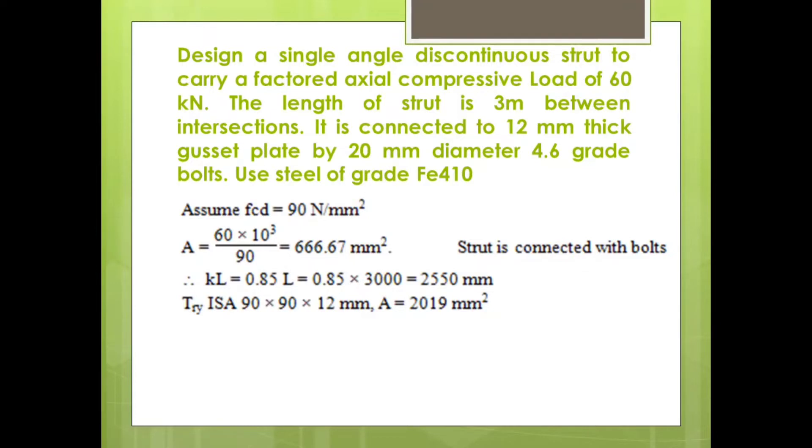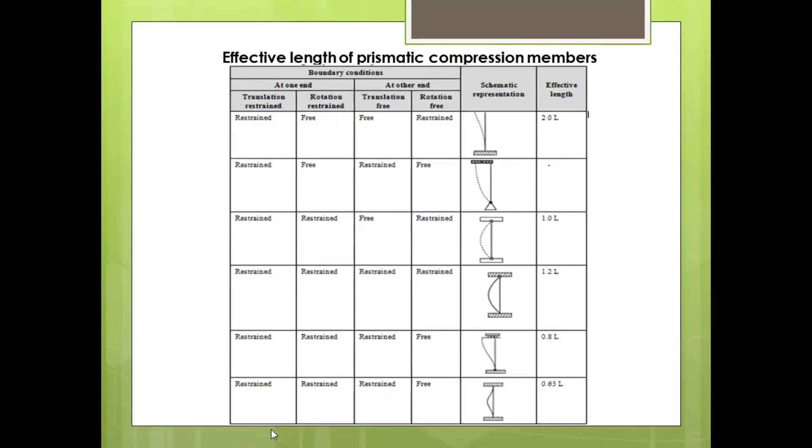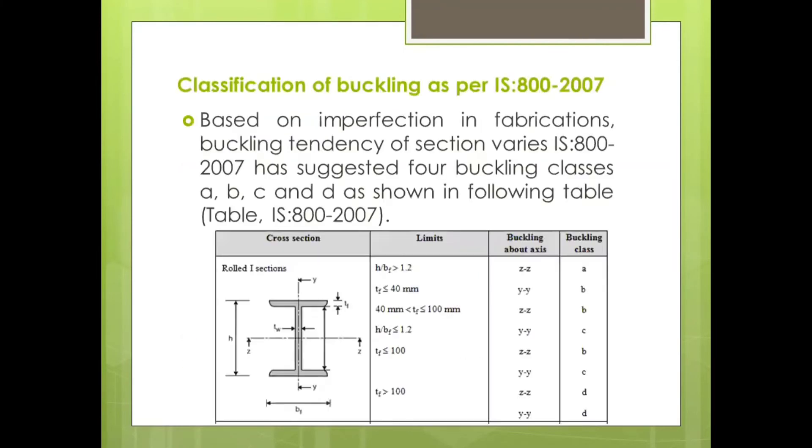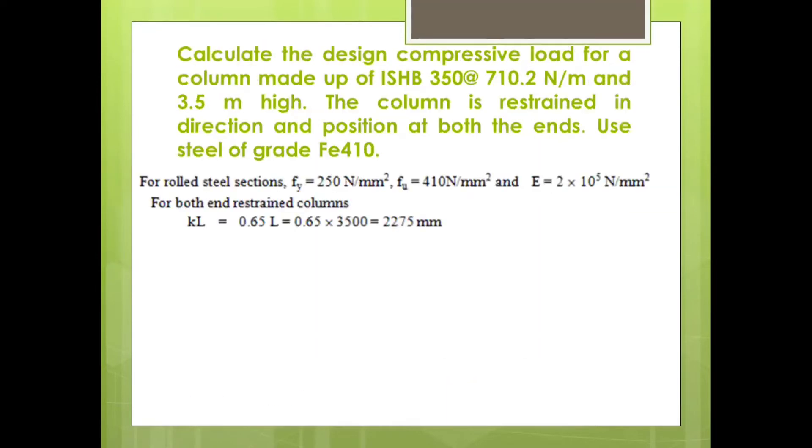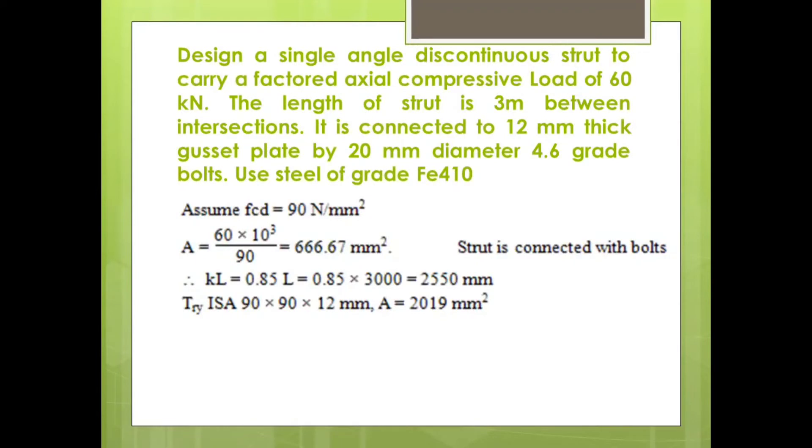And when both ends are hinged joints, IS code recommends effective length as 0.85 times original length. Let us go to that particular table given by IS code, which says here, if both ends are hinge connections, then we have to use 0.85 times L the length. So our effective length is 0.85 times 3000, which is 2550 mm.